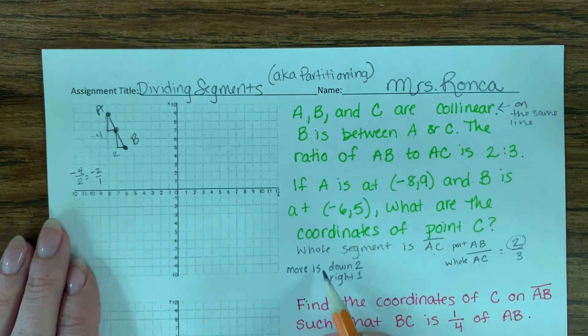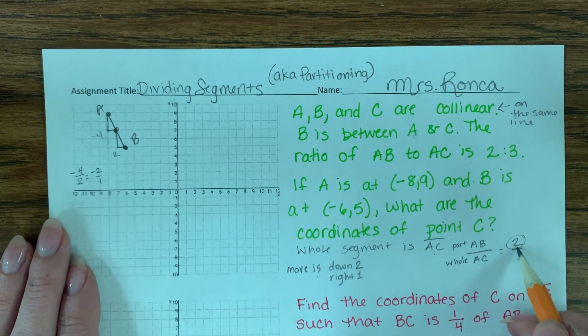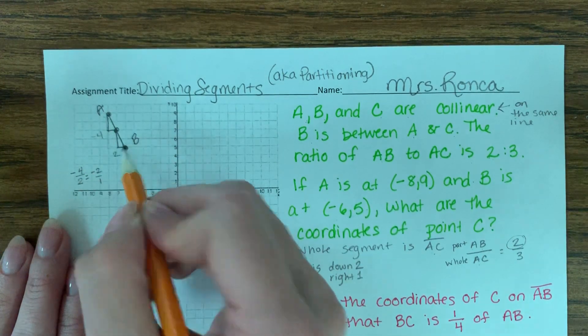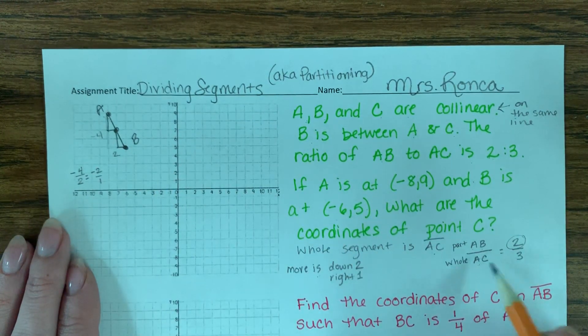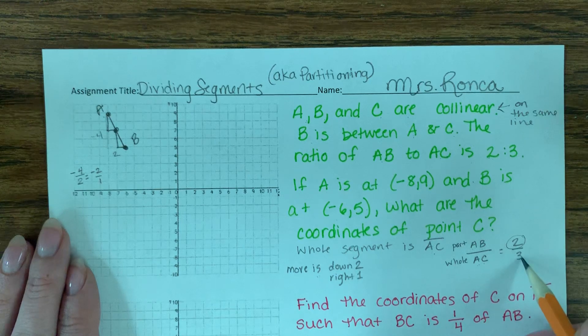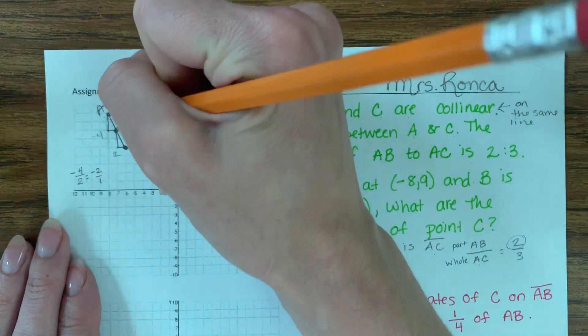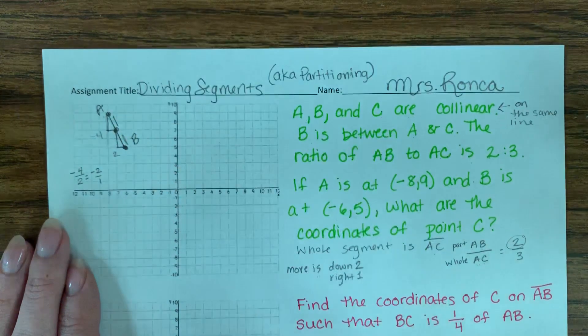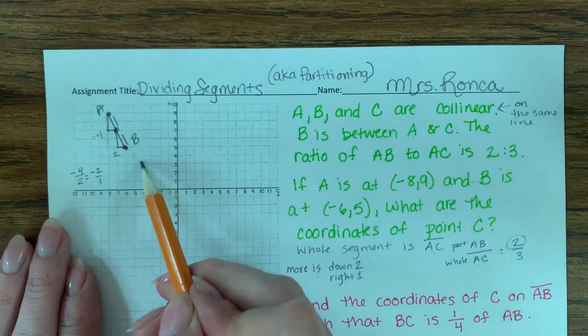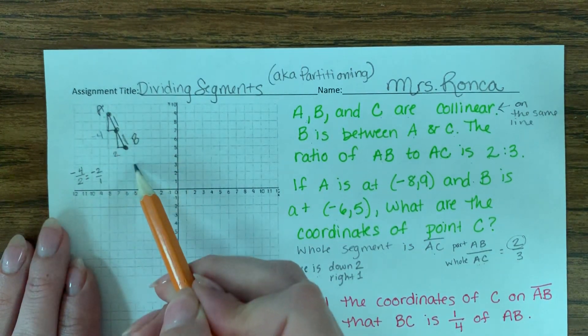And I did that move two times from A to B. Now the whole thing says I'm supposed to do the move three times to get from A to C. So this is one section, this is two sections. I just need a third section to get from A to C.